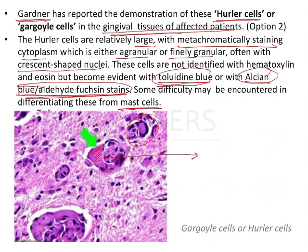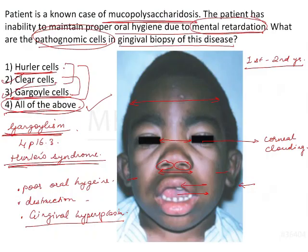Some difficulty may be encountered in differentiating these from mast cells, as they appear similar. The pathognomic hallmark cells in mucopolysaccharidosis are Hurler cells, clear cells, or gargoyle cells — all of which are the same cells. The answer is all of the above.